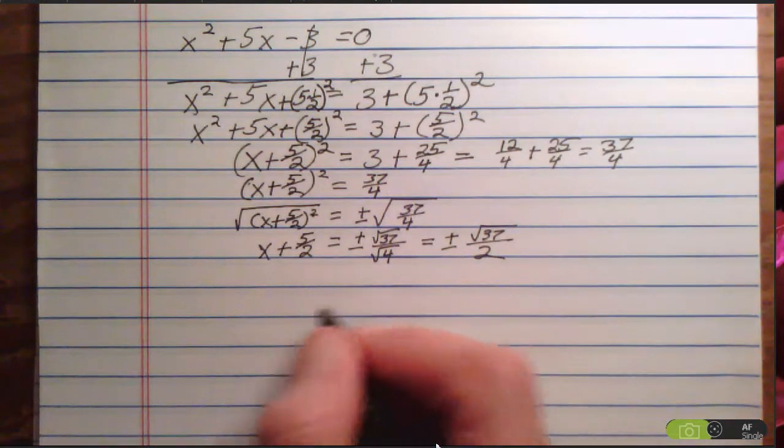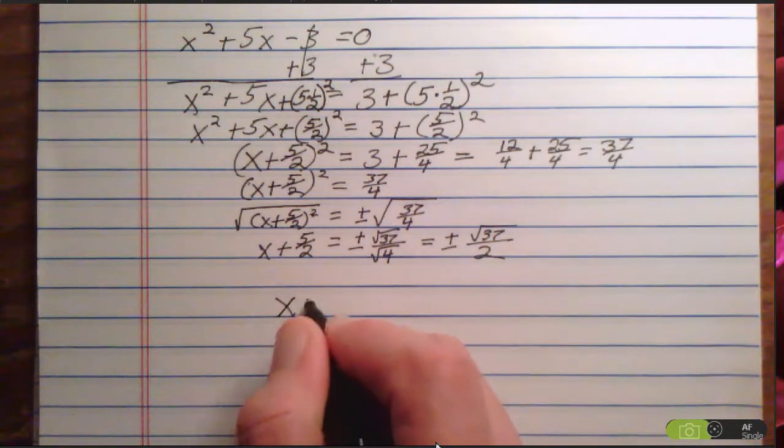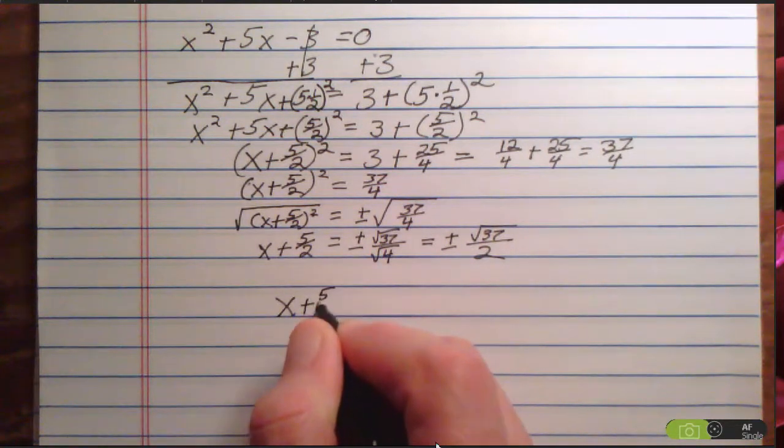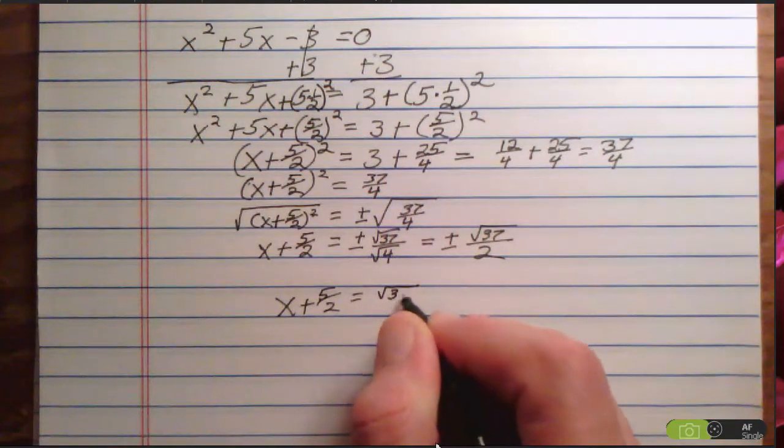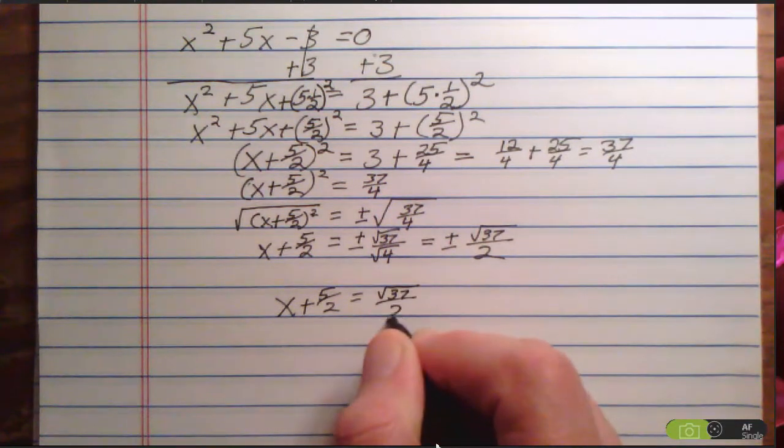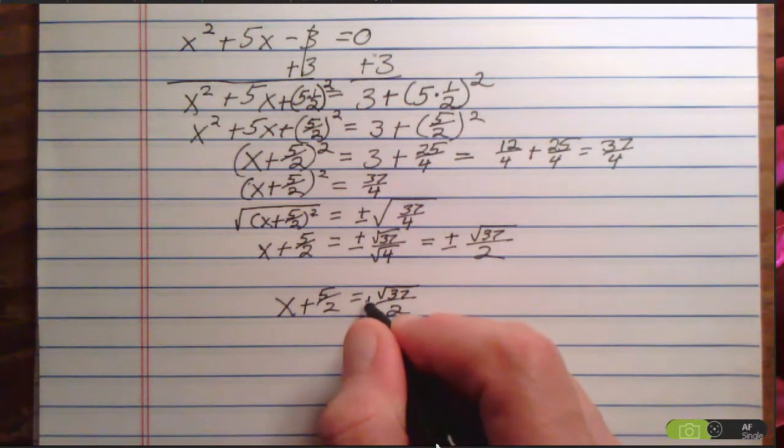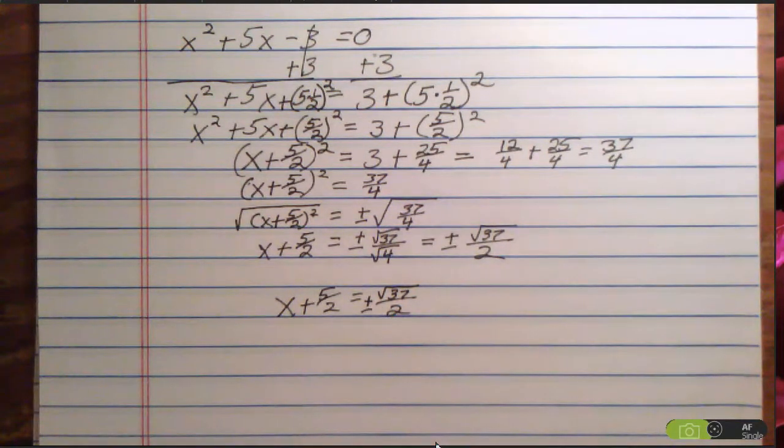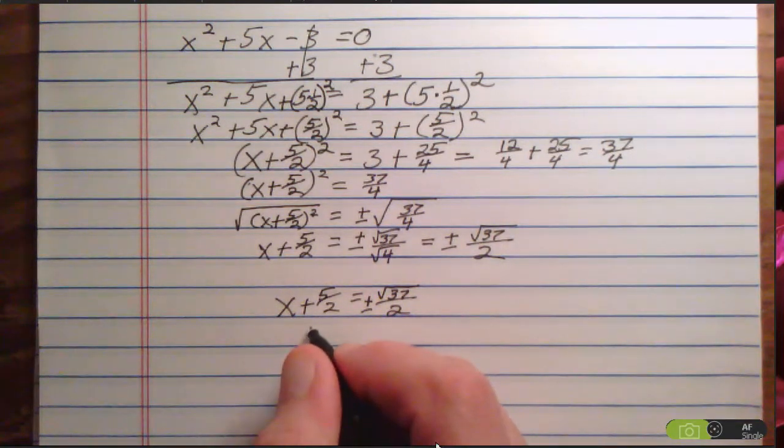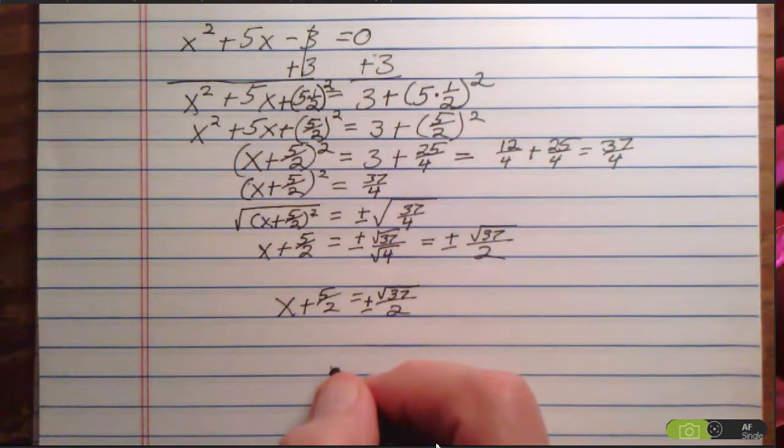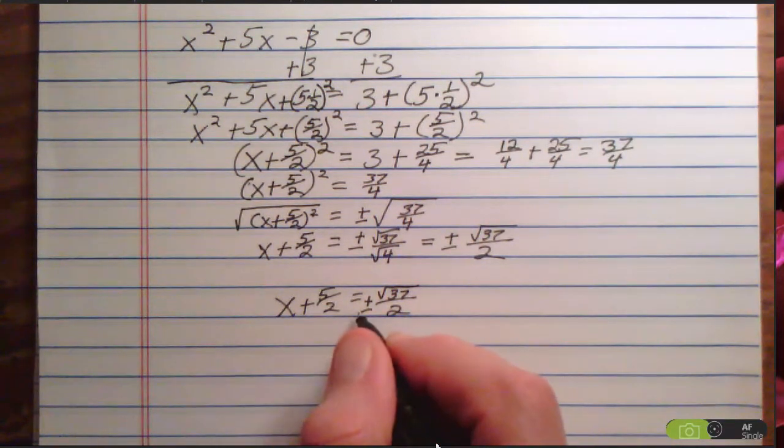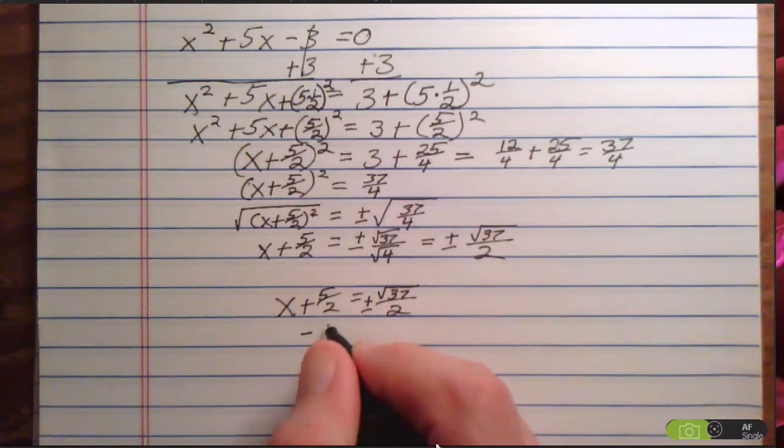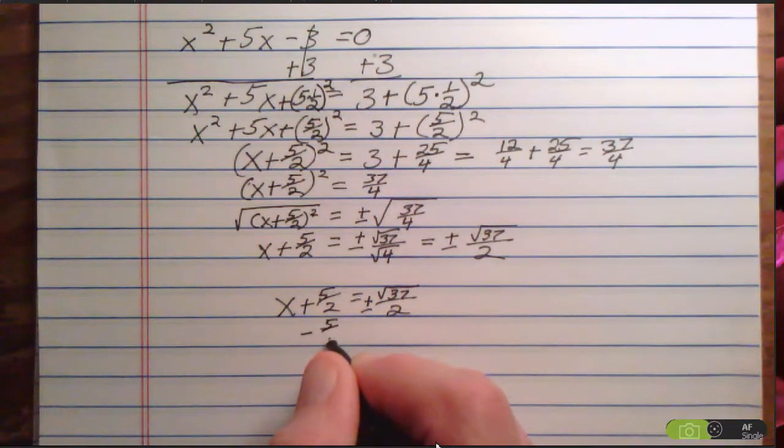Now we have x + 5/2 = ±√37/2. To solve for x, I subtract 5/2 from both sides of the equation, making sure that when I subtract it from the right-hand side, I put it in front of the plus-minus sign.